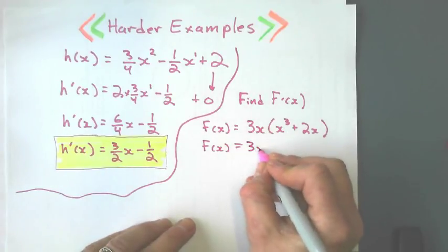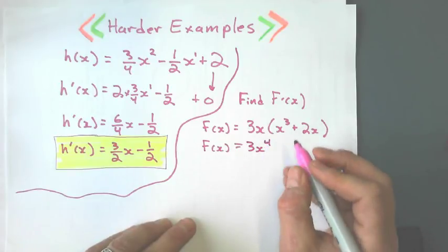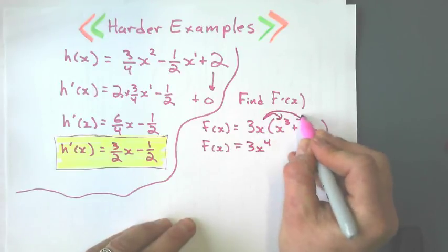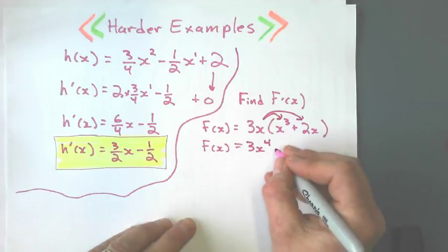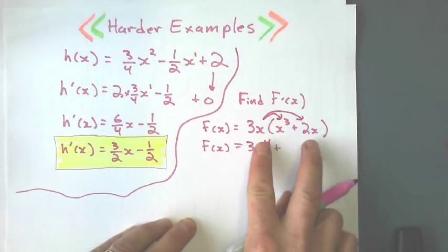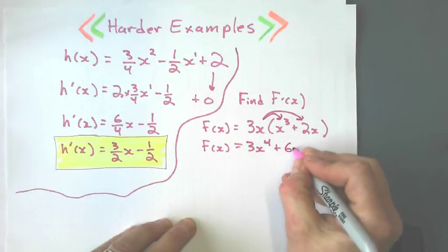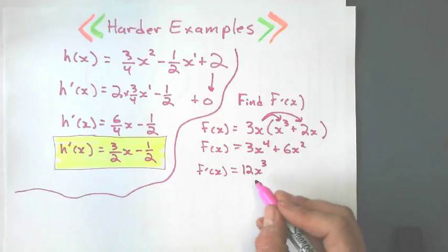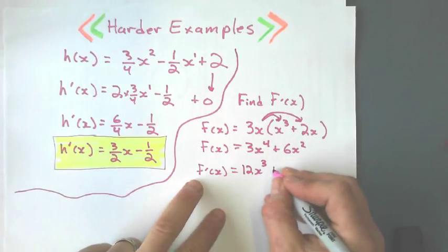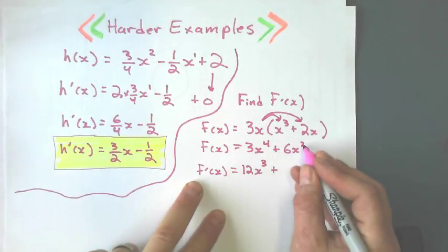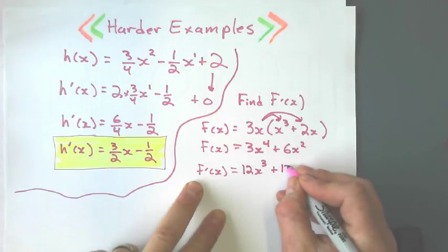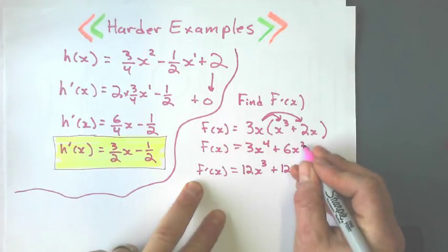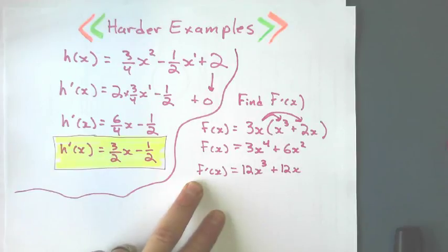3x times x cubed is 3x to the fourth because I multiply that. And then I multiply 3x times 2x. And again, we've got to know algebra. 3x times 2x is 6x squared. Now that I have no brackets, now I can differentiate it. 12x cubed is when I differentiate this term. And this guy, easy one to differentiate. 2 times 6 is 12. Take 1 off the exponent. Leaves me with 1, so I don't have to write that 1 there. Okay.